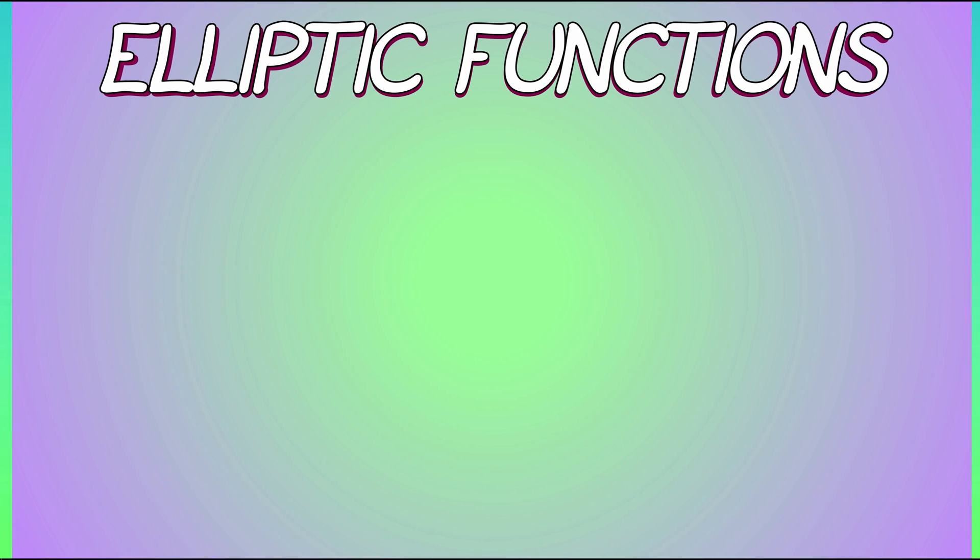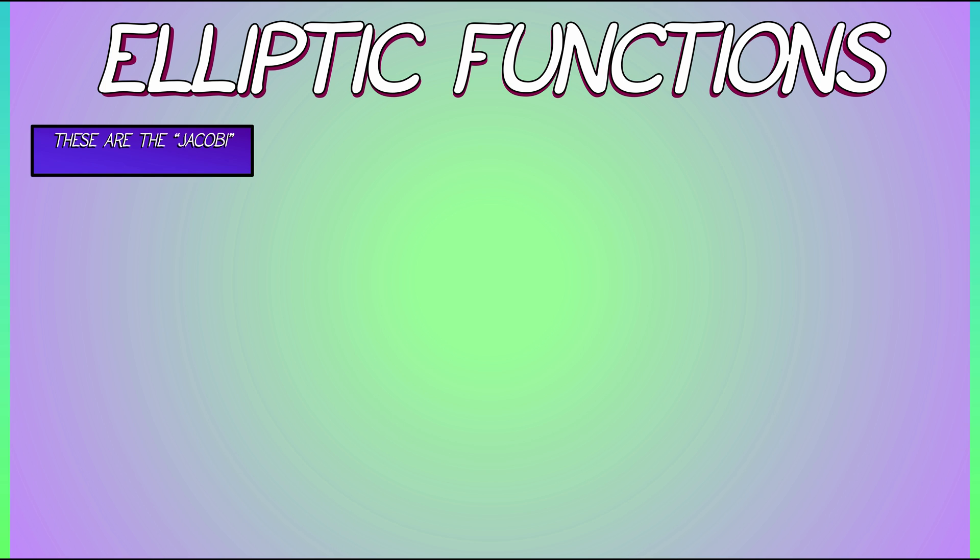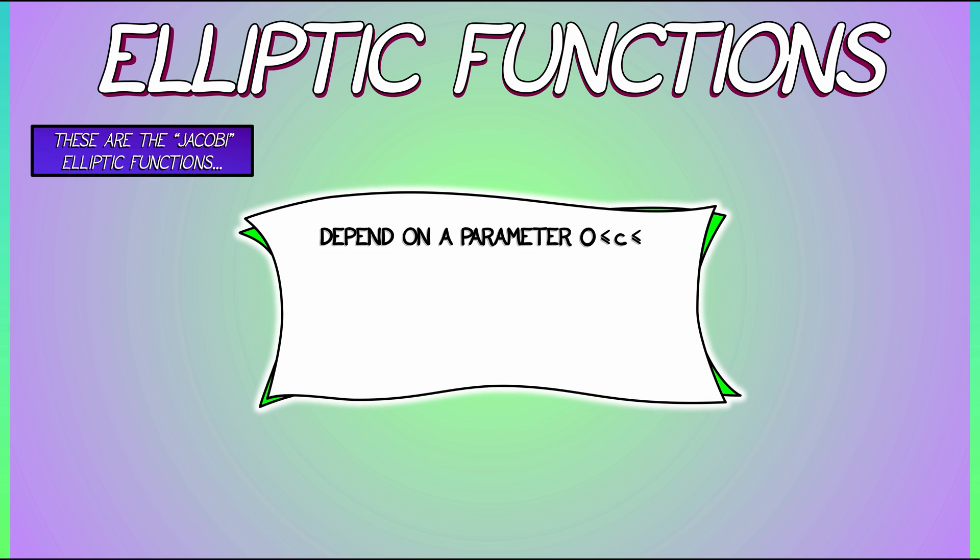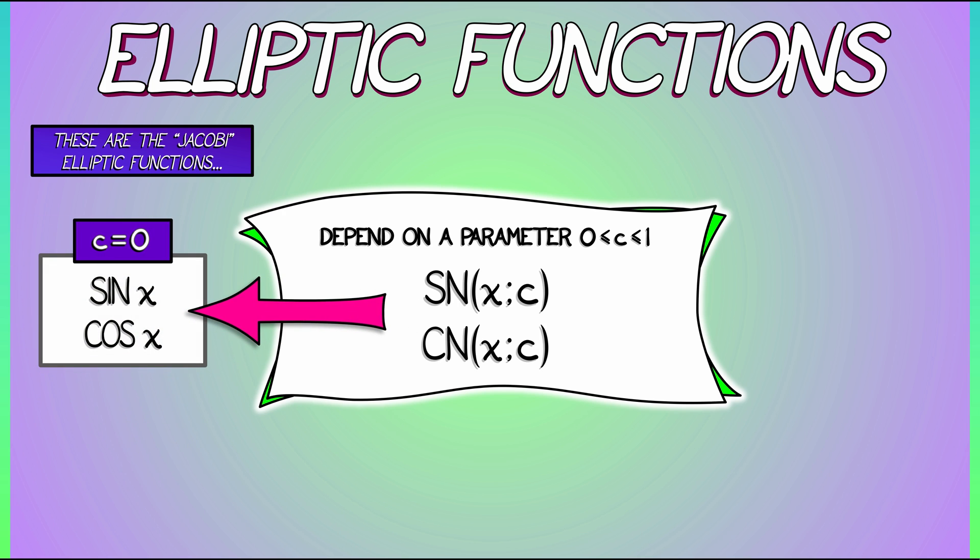Here is one class of functions, the elliptic functions, the Jacobi elliptic functions, as opposed to the Weierstrass elliptic functions. And these depend on a parameter c that is somewhere between 0 and 1. The basic Jacobi elliptic functions are sn and cn. Now, again, these are functions of x with a parameter c. Now, how do we pronounce this? I don't know. I say sn and cn. Some people say sun and cn or sin and kin or san and can. I don't know. But sn and cn are supposed to remind you of the sine and cosine functions.